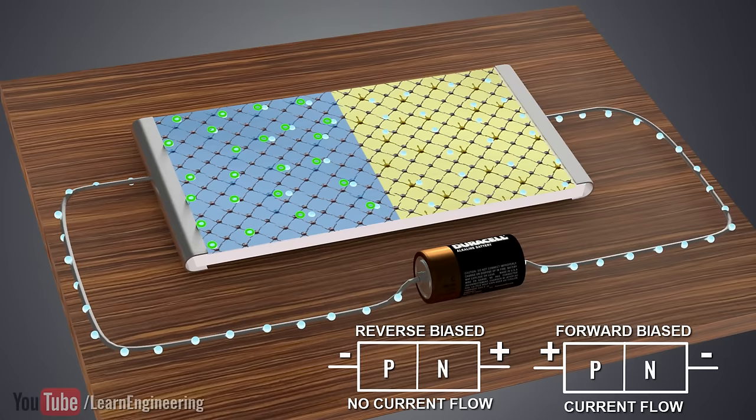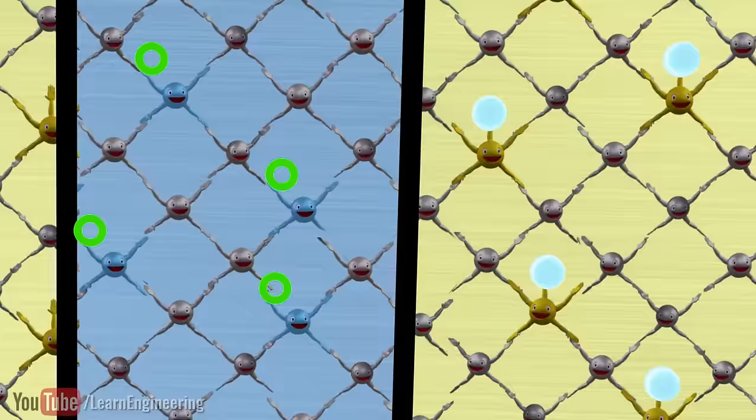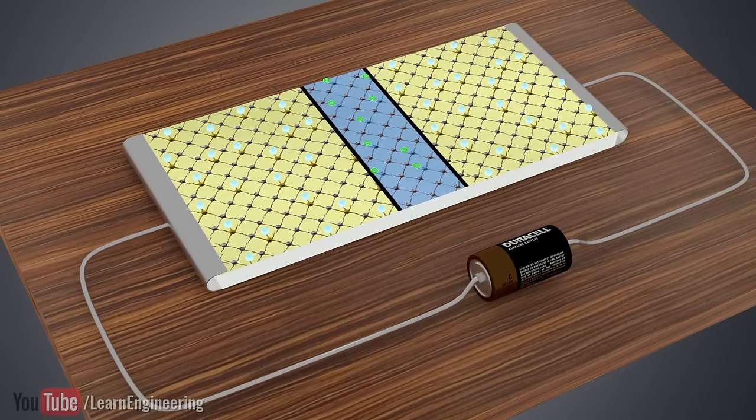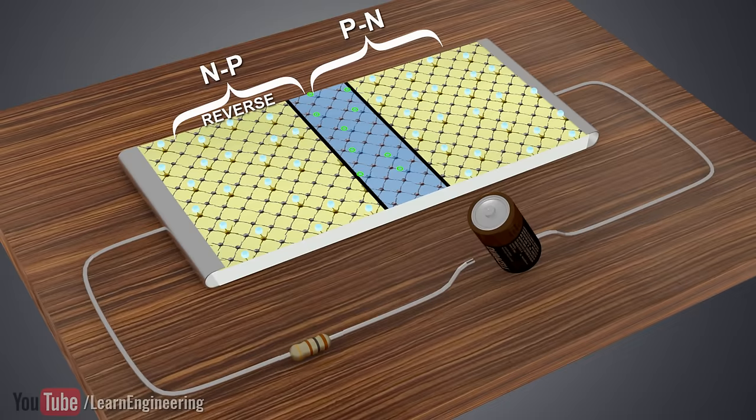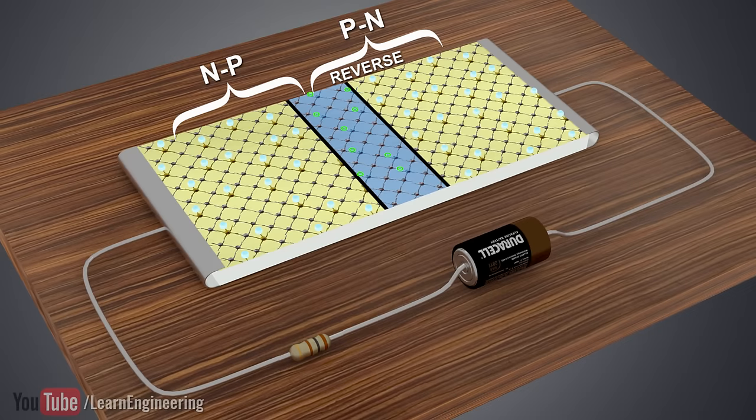Now, back to the transistor. Note that the p-layer is really thin and lightly doped. You can easily see that the transistor is essentially two diodes sandwiched back to back. So, whichever way you connect the power source, one diode will always be reverse biased and block the electricity flow. This means the transistor is in the off state.